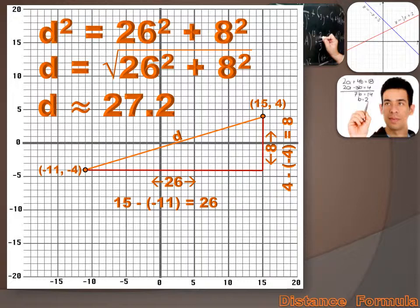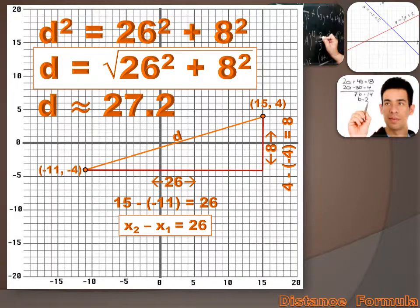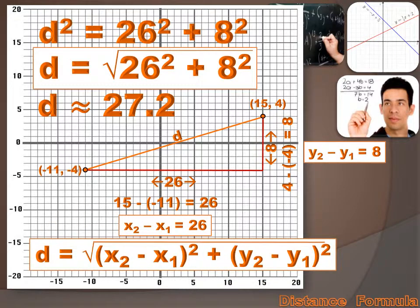The 26 we got by subtracting one x value from the other: x₂ minus x₁ equaled 26. And the 8 we got by subtracting one y value from the other: y₂ minus y₁ equaled 8. We can make this a generic formula by substituting x₂ - x₁ for 26 and y₂ - y₁ for 8. That gives us the distance formula: d = √[(x₂ - x₁)² + (y₂ - y₁)²].